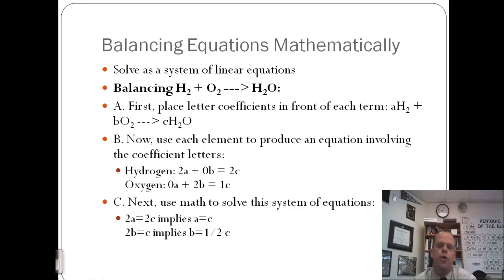So really, we end up with two equations, because we have two elements. We can simplify those two equations. The first equation, 2A equals 2C, can simplify to A equals C. The second equation, 2B equals C, can simplify down into B equals half C, if you want to go to a fraction.